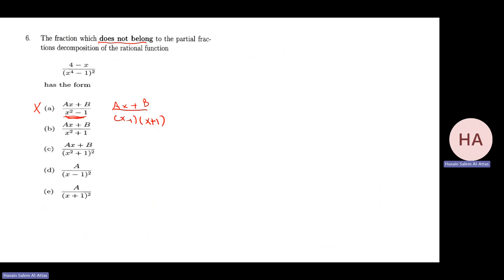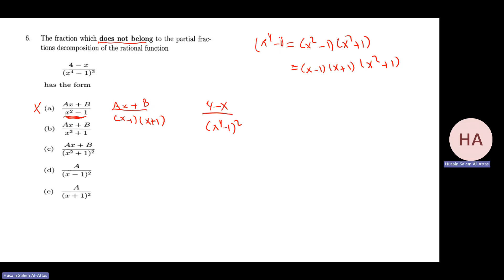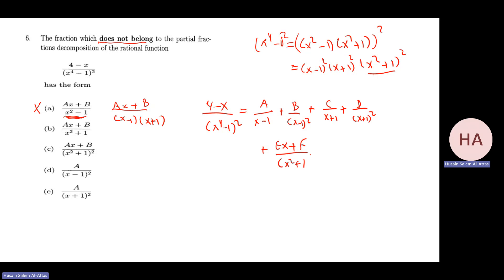Let me prove the rest are valid. For (4 - x) over (x⁴ - 1): factoring gives (x² - 1)(x² + 1) = (x-1)(x+1)(x²+1). Since the denominator is squared, decomposition gives A/(x-1) + B/(x-1)² + C/(x+1) + D/(x+1)² + (Ex + F)/(x²+1) + (Gx + H)/(x²+1)². So those are all valid.